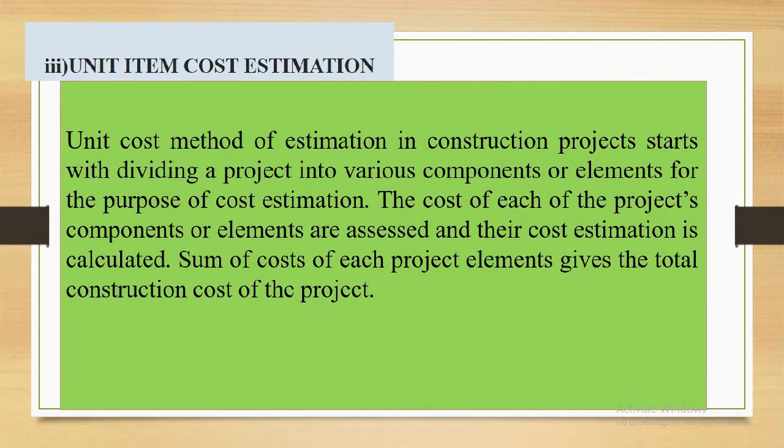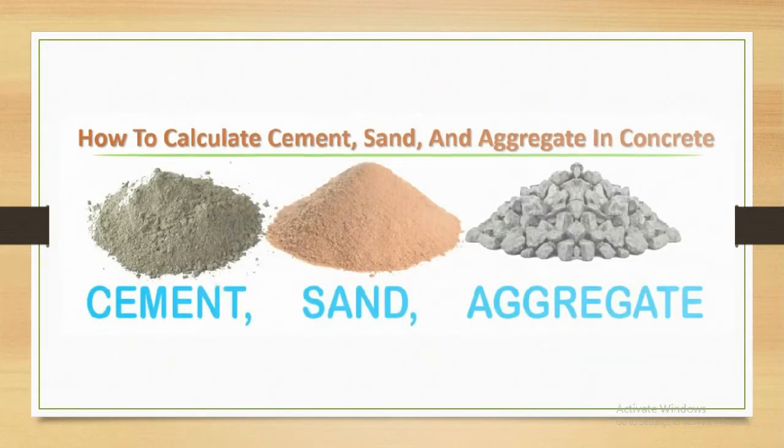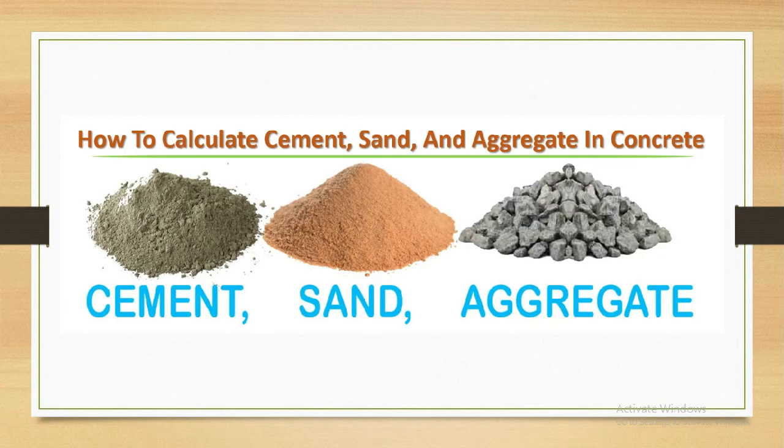Third method, unit item cost estimation. Unit cost method of estimation in construction projects starts with dividing a project into various components or elements for the purpose of cost estimation. The cost of each of the project components or elements are assessed and their cost estimation is calculated. Sum of cost of each project elements gives the total construction cost of the project. So here in unit price calculation cost estimation, we calculate the different materials separately like cement, sand, aggregates, steel and others.